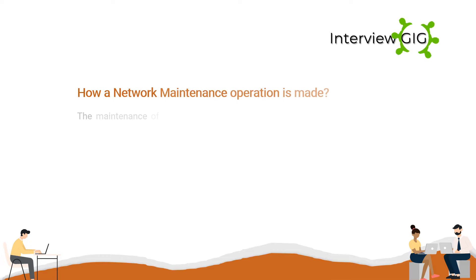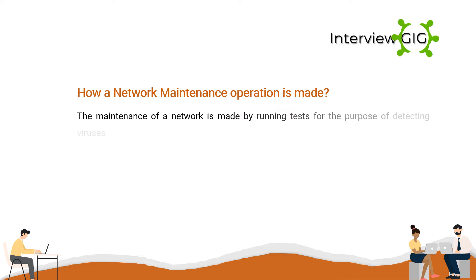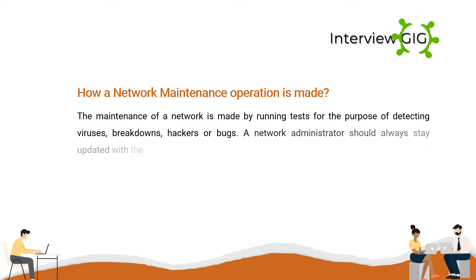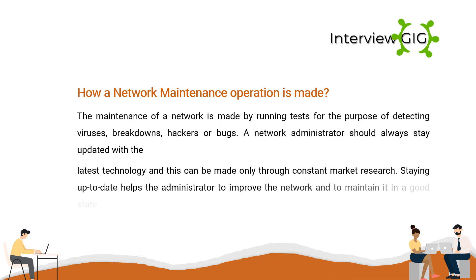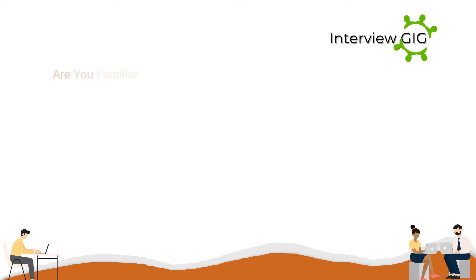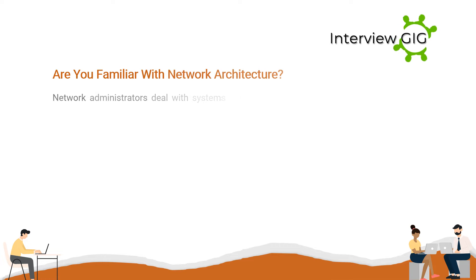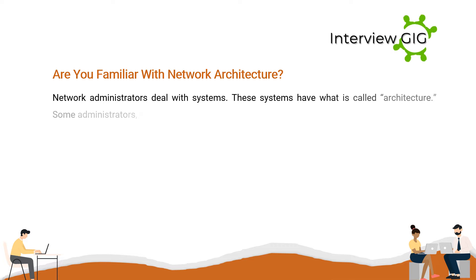How is a network maintenance operation performed? The maintenance of a network is made by running tests for the purpose of detecting viruses, breakdowns, hackers, or bugs. A network administrator should always stay updated with the latest technology, and this can be achieved only through constant market research. Staying up-to-date helps the administrator to improve the network and to maintain it in a good state all the time.